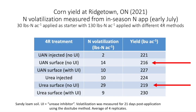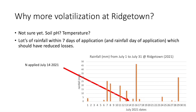At Ridgetown in 2021, there were fairly high losses across the different treatments. The urease inhibitor and injection both clearly lowered losses, and that translated into higher yields — about an 11-bushel yield response to using the urease inhibitor. Losses were high even though there was lots of rainfall very soon after application, but the urease inhibitor still proved its value in terms of both yield improvement and reduction in volatilization losses.